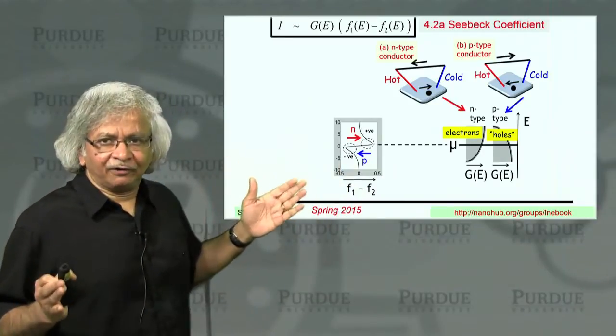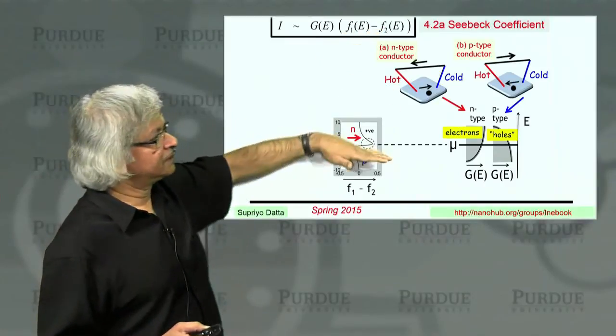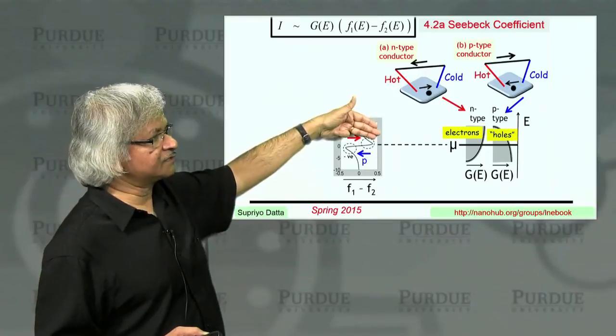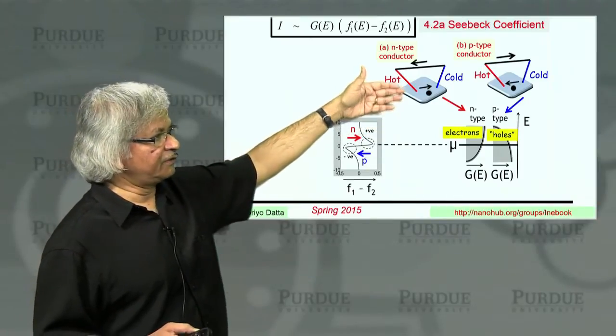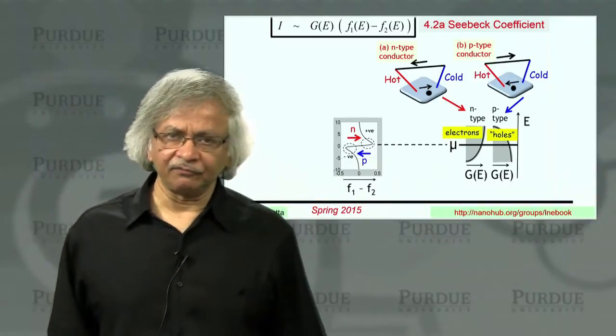So that is why I feel that this description to say that p-type, it's holes and hence things got reversed, that really isn't quite the full story. What is much more straightforward is to say that current is basically F1 minus F2. Above mu, it's positive. Below mu, it's negative. If you have lots of states above mu, you have n-type material. If you have more states below mu, it's a p-type material. So really that's straightforward.